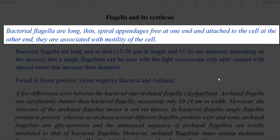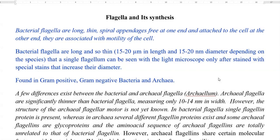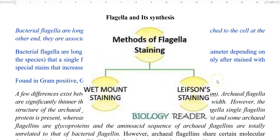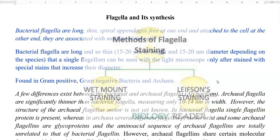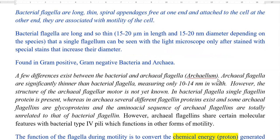They are generally associated with the motility or movement of the cell. Bacterial flagella are long and thin, around 15 to 20 micrometers in length and 15 to 20 nanometers in diameter. This changes depending on the species of the bacteria. A single flagellum can be seen through a light microscope and can be stained using special staining techniques. They are found in gram positive, gram negative bacteria, and also in the archaea, which is the third domain of life.